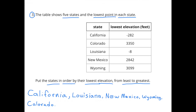Number 3. The table shows 5 states and the lowest point in each state. Put the states in order by their lowest elevation from least to greatest. California's lowest elevation is negative 282 feet, so it goes first. Louisiana is also negative, at negative 8 feet below sea level, so it goes second. Next is New Mexico at 2,842 feet, then Wyoming at 3,099 feet, and finally Colorado at 3,350 feet above sea level.